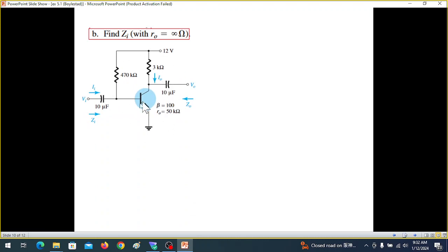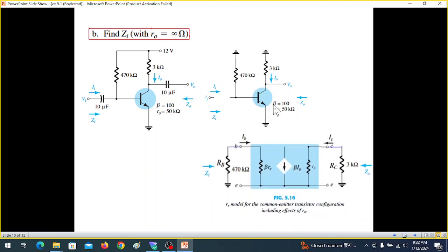And the second part is find ZI with RO approximately or RO equal to infinity. So now we have to go to the AC model as we have told that we ground the battery, remove the capacitors. So this is the remaining circuit. And from here we need to find ZI. We replace this one with the equivalent RE model circuit. This resistor at the input or the RB resistor comes here grounded, and similarly the collector resistance RC is also shown here or connected with the circuit. So from this circuit now we need to find ZI. And you can see ZI, we're looking from here.